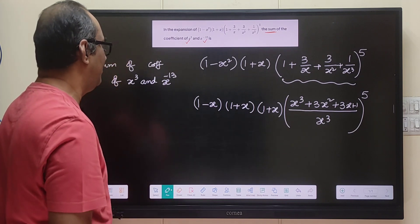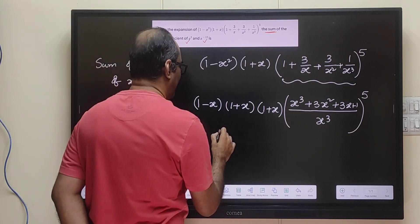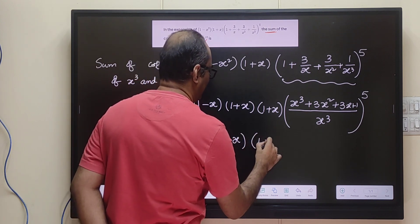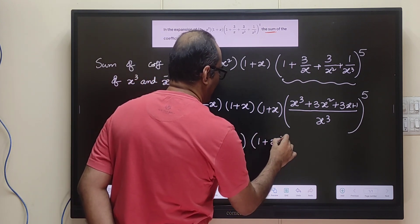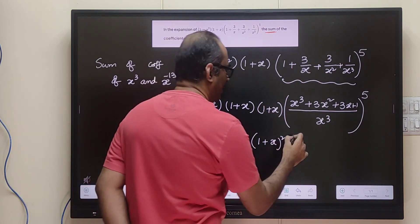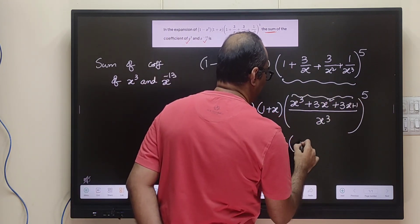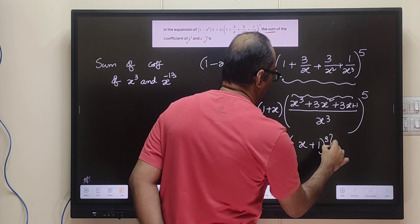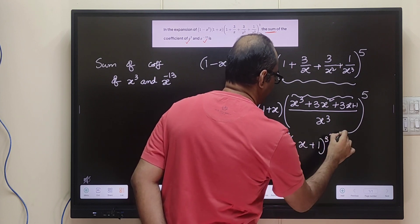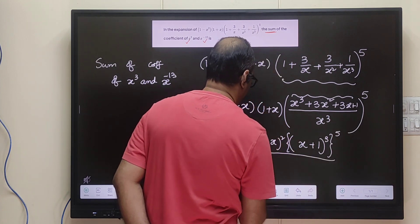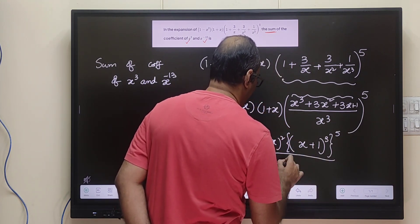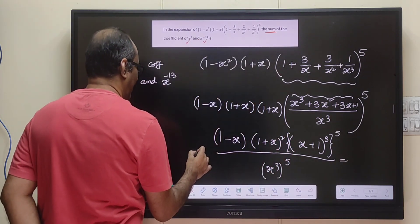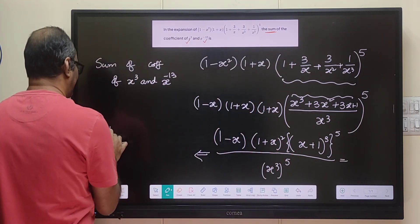Now let us simplify and count the (x plus 1) terms. We have 17 (x plus 1) terms in total — (x plus 1) into (x plus 1) into (x plus 1) — giving (1 plus x) to the power of 15, multiplied by (1 minus x), divided by x to the power 15. So the given problem simply becomes (1 minus x) into (1 plus x) to the power of 17, divided by x to the power 15.